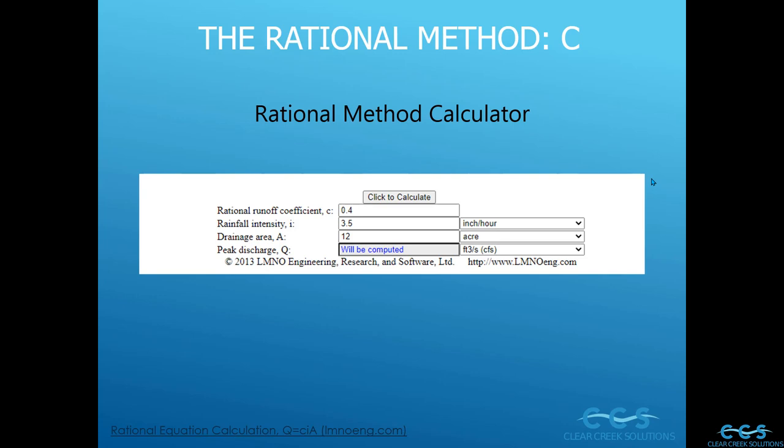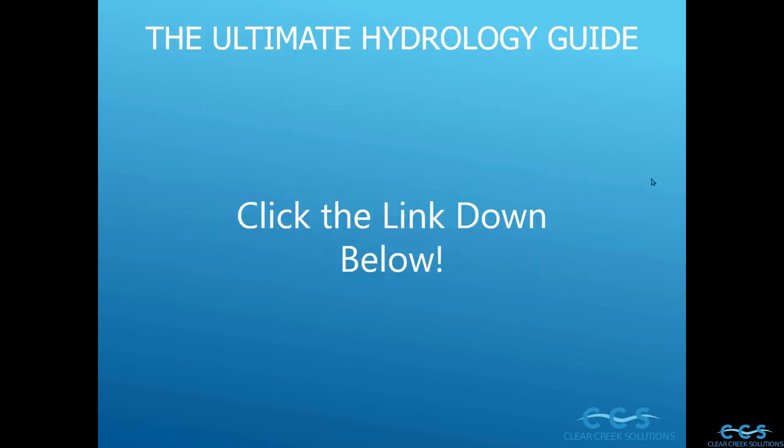An interesting tool you can find online is a rational method calculator — the link is in the bottom left. You can enter different drainage area values, rainfall intensity, and rational method runoff coefficient to see the peak discharge calculated. If you want to learn more about hydrology methods — continuous simulation, the SCS runoff method, the rational method — and are confused about how they work and their limitations, download our ultimate hydrology guide from Clear Creek Solutions, 100% free. Click the link below. Thank you for watching, stormwater designers.